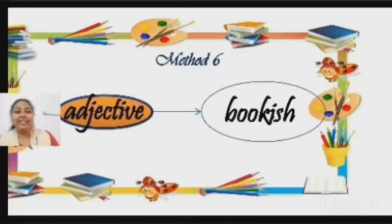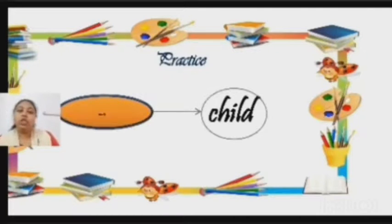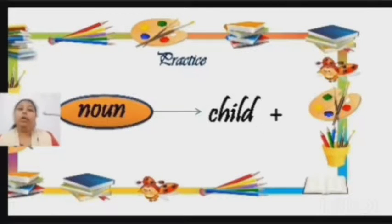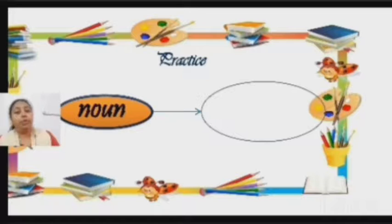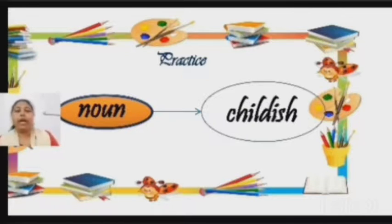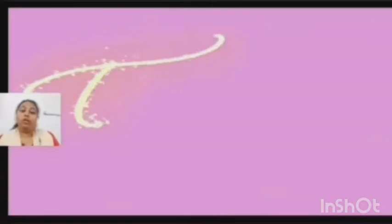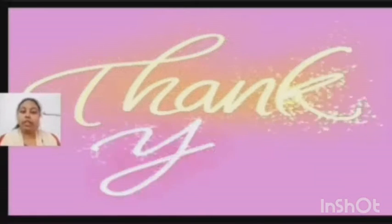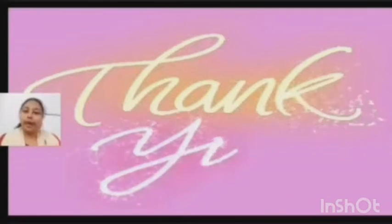Let us do one more practice. The word is 'child'. We are going to add the suffix '-ish', so the new word formed after adding '-ish' is 'childish', which is an adjective. So children, today we have learnt six methods of changing nouns into adjectives.